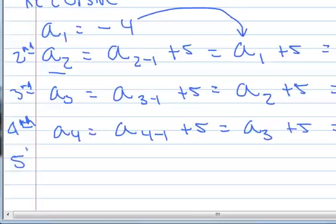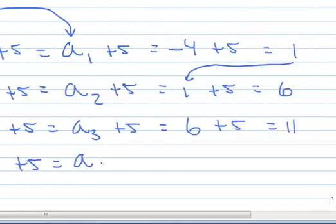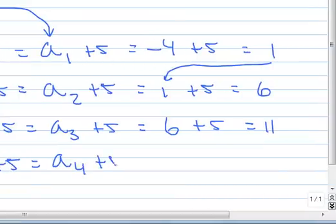And now we want to find the fifth term, which is a sub 5. The formula says that's a sub 5 minus 1 plus 5. 5 minus 1 is really 4, plus 5. A sub 4 is the previous term, so that's 11. Add 5, and we get 16.